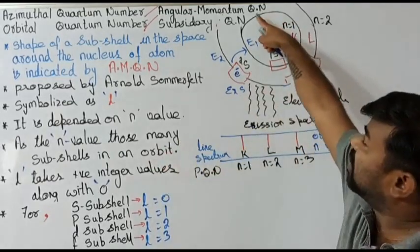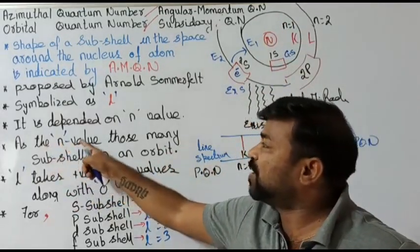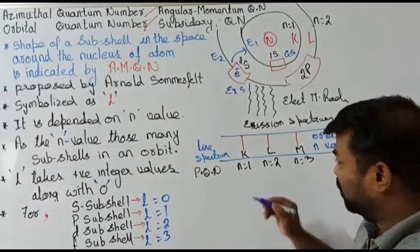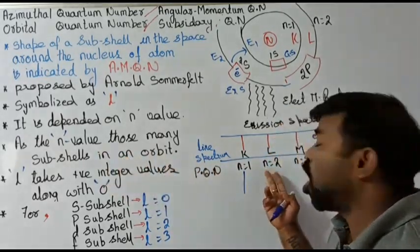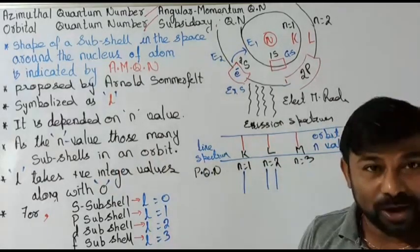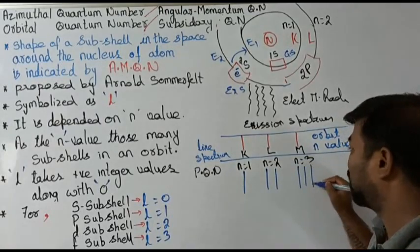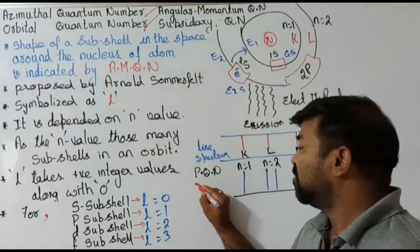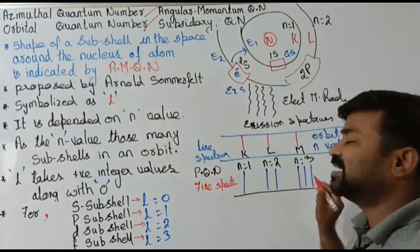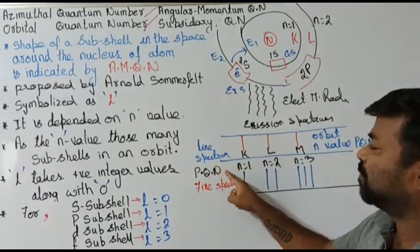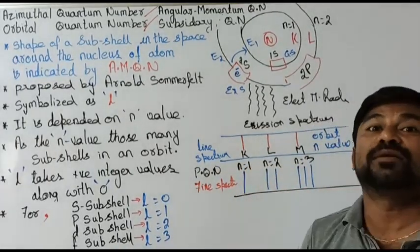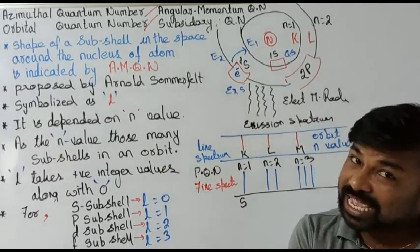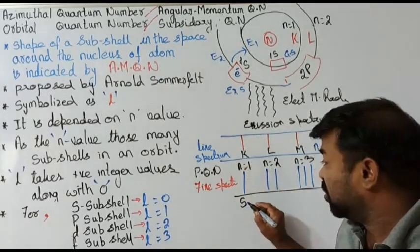As I said, as many n values, those many subshells it has. If n equals one, it has one subshell. If n equals two, it has two subshells. If n equals three, it has three subshells. Now this line spectrum is denoted by the principal quantum number, and the fine spectrum corresponds to the subshells. For the first orbit we have 1s; for the second orbit, 2s and 2p; for the third orbit, 3s, 3p, and 3d.